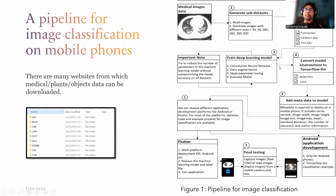The third step is to develop a deep learning model for training and testing. We use a convolutional neural network. There are many architectures which can be used. At this step, you can also use data augmentation techniques to improve classification accuracy, making the model better for real-time testing. We can also tune hyperparameters to improve the final accuracy — for example, by including multiple layers and changing the number of neurons or filters in each layer.